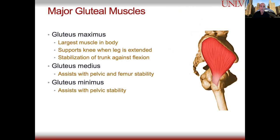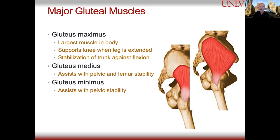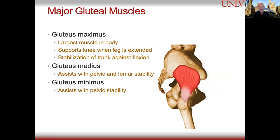Then we have the gluteus medius, which is kind of the next layer down. It assists with pelvic and femur stability, as well as being a hip abductor — allowing your leg to come out from the side of your body — and also functions as an internal and external rotator. Then the gluteus minimus, the next level down, also assists with pelvic stability. When you look at all three of these, the theme is stabilization — and that's truly what we're trying to maintain when we think about glute activation.